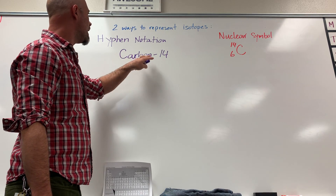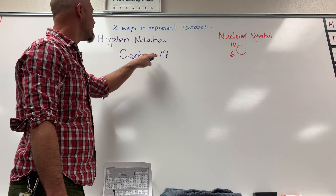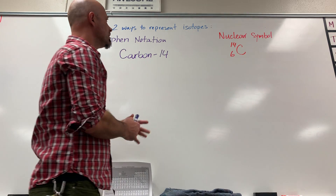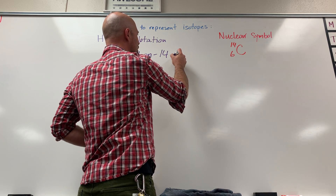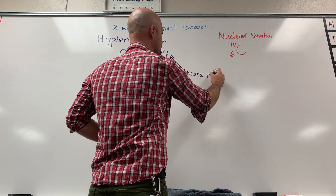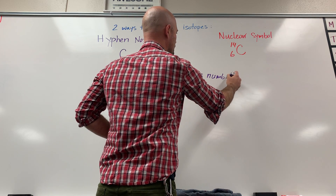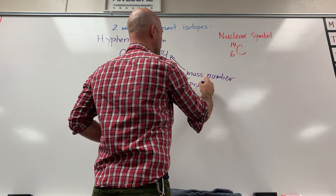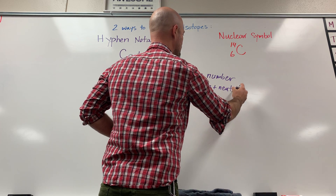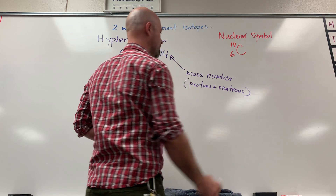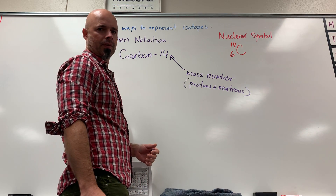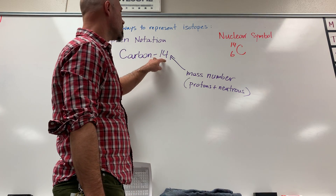If you look, you have the name of the element, a hyphen, and then the 14. So 14 is called the mass number, which is basically the sum of protons and neutrons in the nucleus of the atom — essentially the number of particles in the nucleus of the atom. So carbon-14.